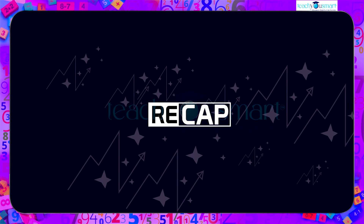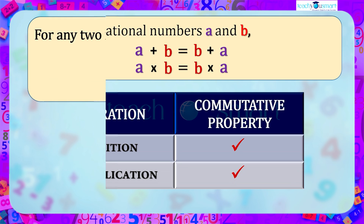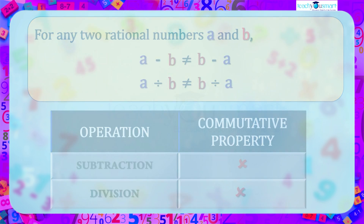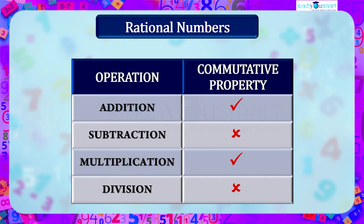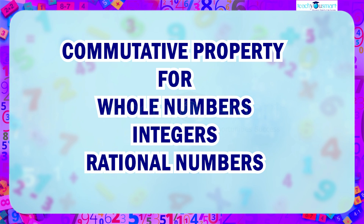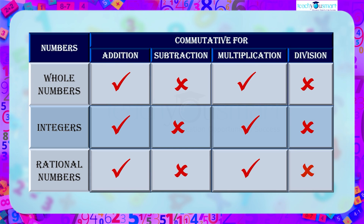Let's recall what we discussed today. For any two rational numbers a and b: a plus b equals b plus a, and a multiplied by b equals b multiplied by a. While a minus b is not equal to b minus a, and a divided by b is not equal to b divided by a. Hence we can say that for rational numbers, addition and multiplication are commutative, while subtraction and division are not commutative. To summarize, the commutative property applies to whole numbers, integers, and rational numbers, and it holds for both addition and multiplication operations.